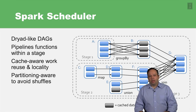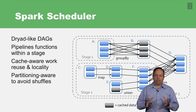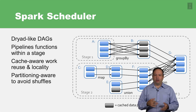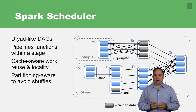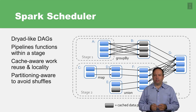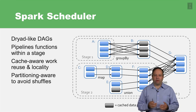Finally, the Spark scheduler is partition aware. Therefore, it tries to consider the partitioning of the data to avoid shuffles. For example, it sees that some computations require a group-by operation, as shown in this picture, and others use unions and so on. It considers that information when scheduling different tasks, so that it minimizes network access traffic and shuffles as far as possible.